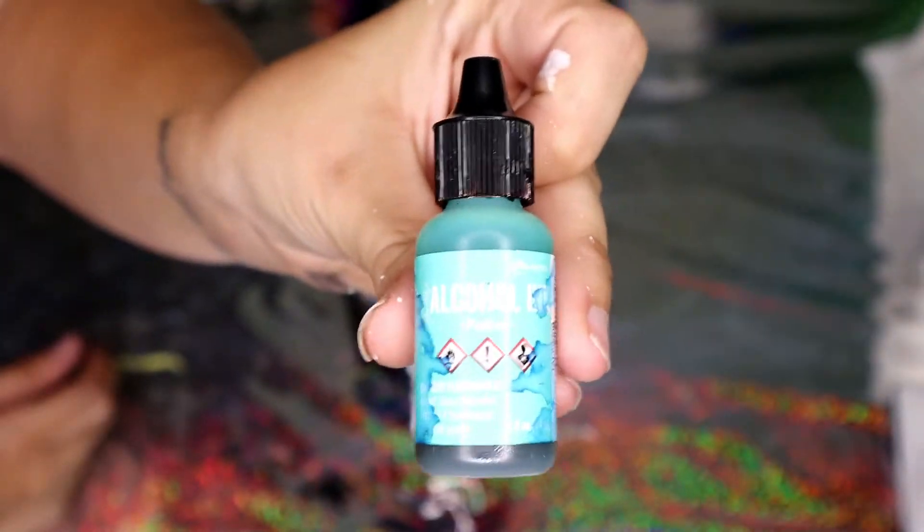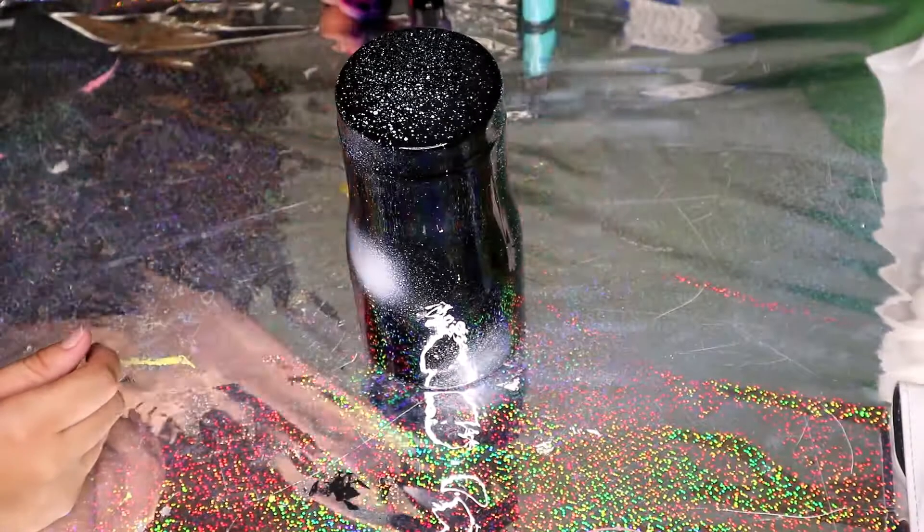The alcohol inks I used in this tutorial were all from Tim Holtz. I used patina, glacier, gumball, and boysenberry.